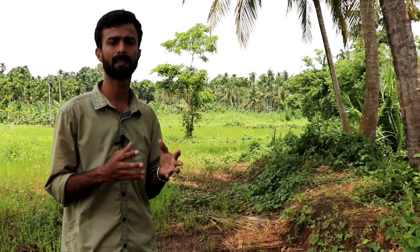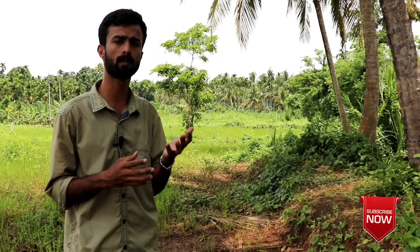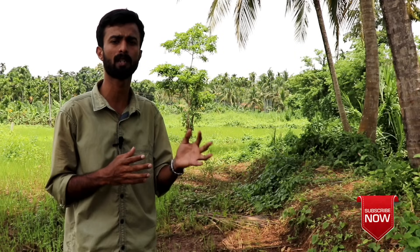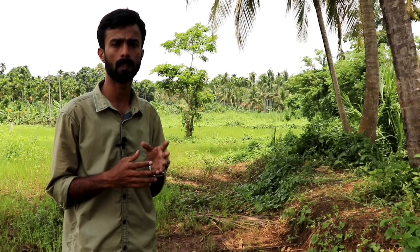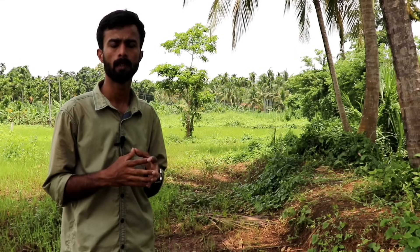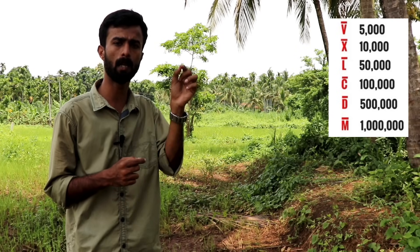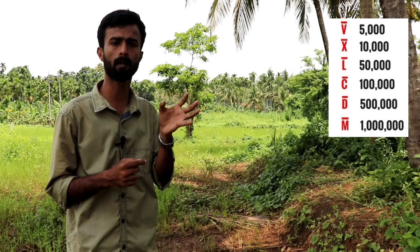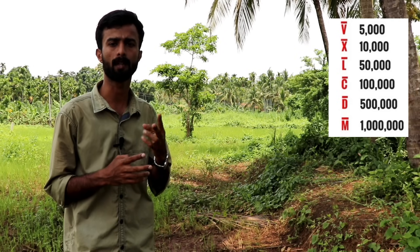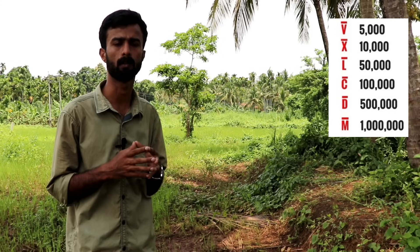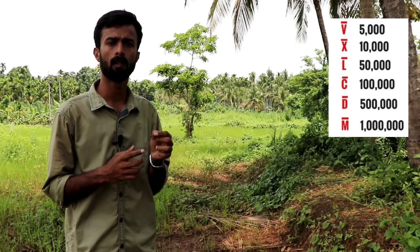We had a rare question in the PCSSE exam. The code symbols are L, C, D, X, V, and I. This is the number of lines — if you add a line over a symbol, that number is multiplied by 1000. For example, if your number is V and you add the line, V becomes 5000. If X has a line, X becomes 10,000.